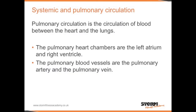The circulation of blood in the body can be broken up into two categories: the systemic circulation and the pulmonary circulation. Pulmonary circulation is the circulation of blood between the heart and the lungs. The pulmonary heart chambers are the left atrium and the right ventricle. The pulmonary blood vessels are the pulmonary artery and the pulmonary vein.